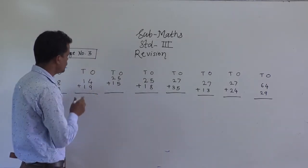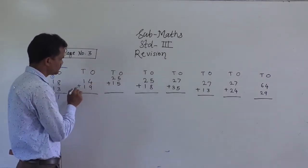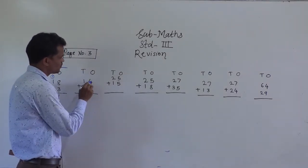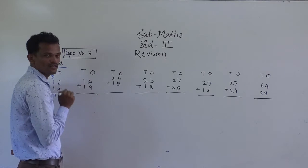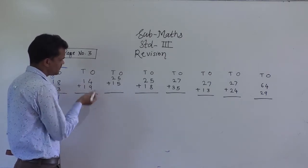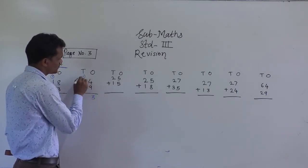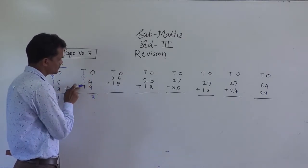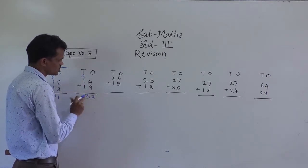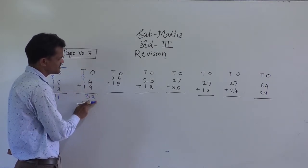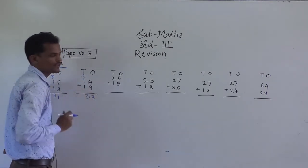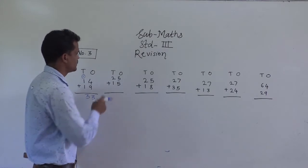Next example: 14 plus 19. 4 plus 9 is 13, so write 3 here and carry 1 forward. 1 plus 1 is 2, plus 1 carry is 3. So 33 is the sum of 14 and 19.